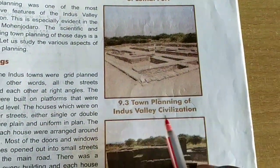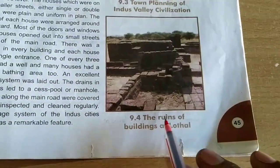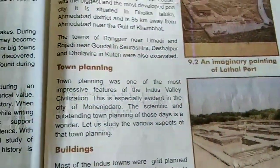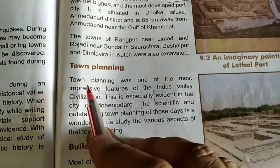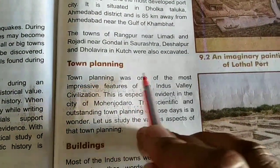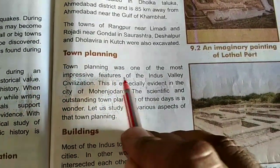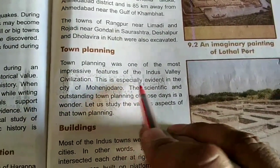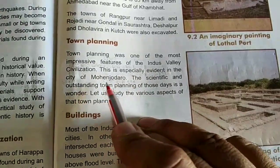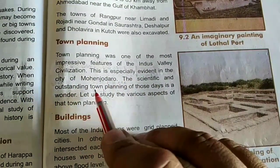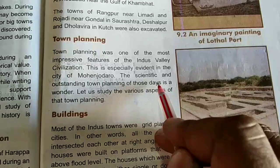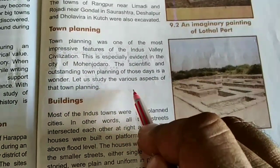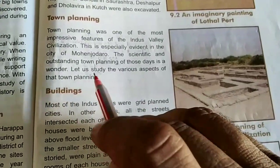Town planning of the Indus Valley Civilization. Here are the ruins of buildings at Lothal. Town planning was one of the most impressive features of the Indus Valley Civilization. This is especially evident in the city of Mohenjo-Daro. The scientific and outstanding town planning of those days is a wonder. Let us study the various aspects of that town planning.